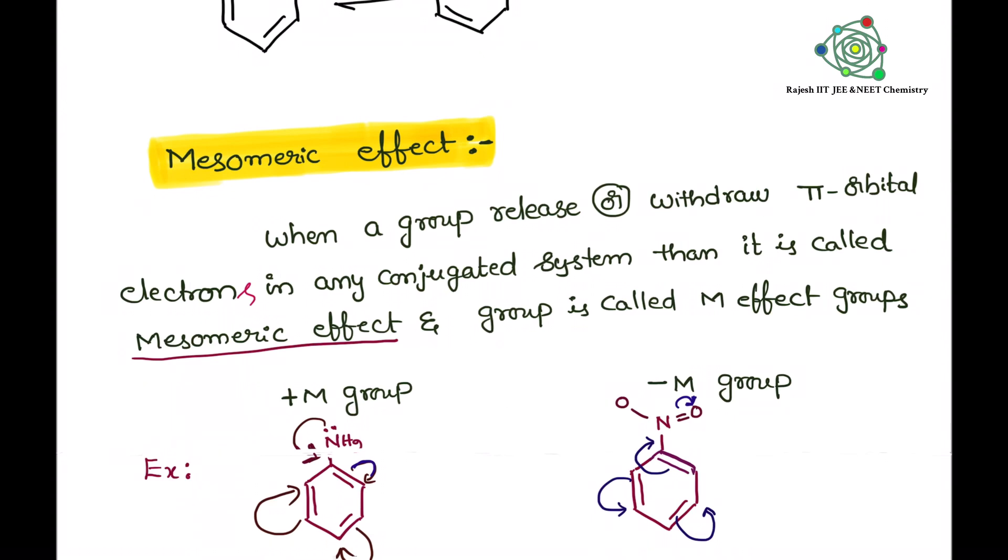The group which is taking or which is giving, that group we can call it as M effect groups. Here everyone should remember, the delocalization of pi electrons are influenced by the group, then that is called as mesomeric effect.